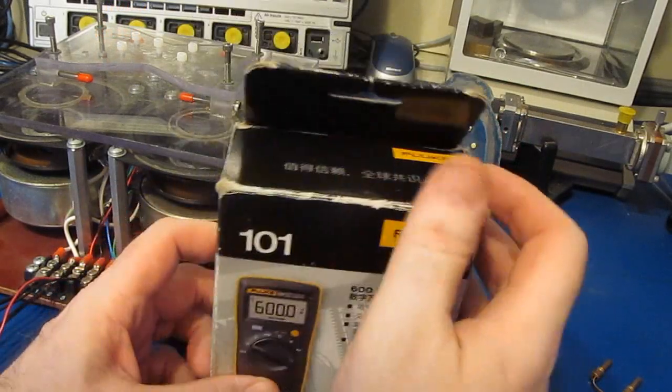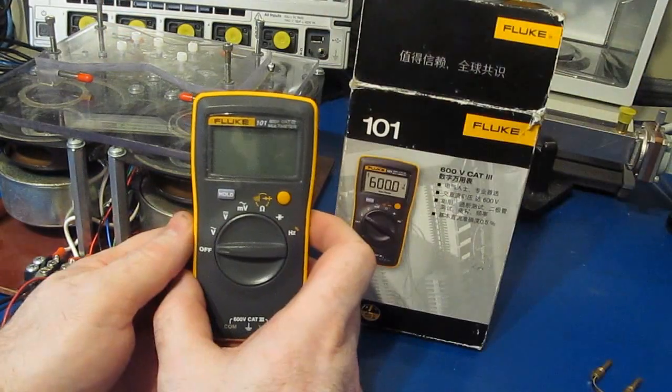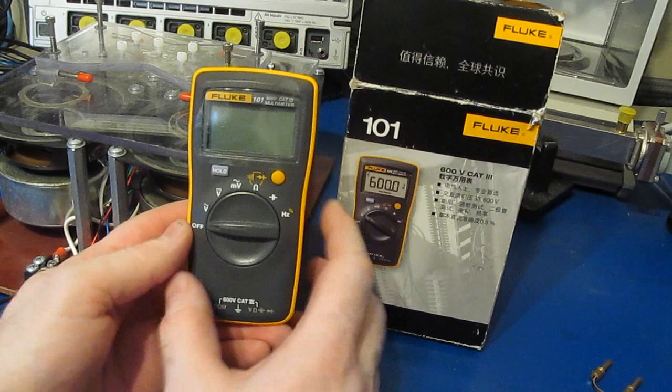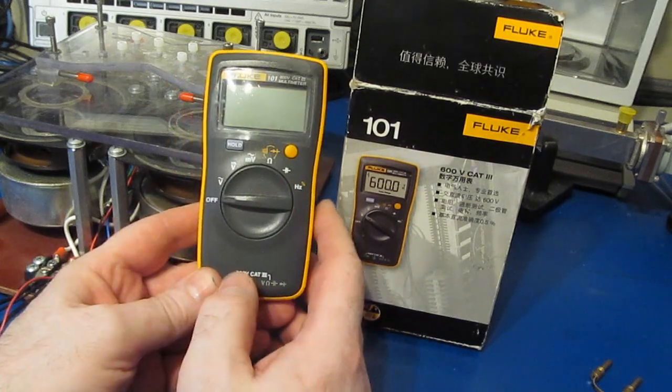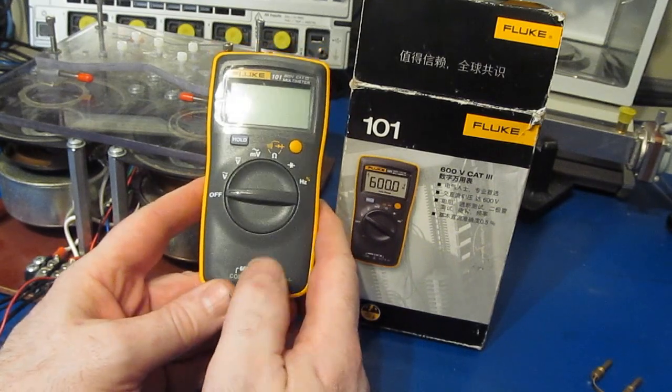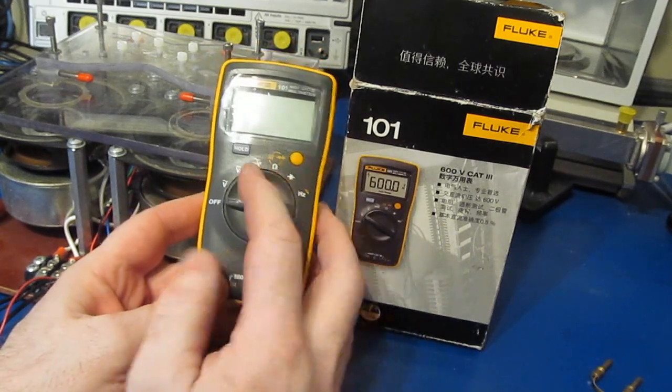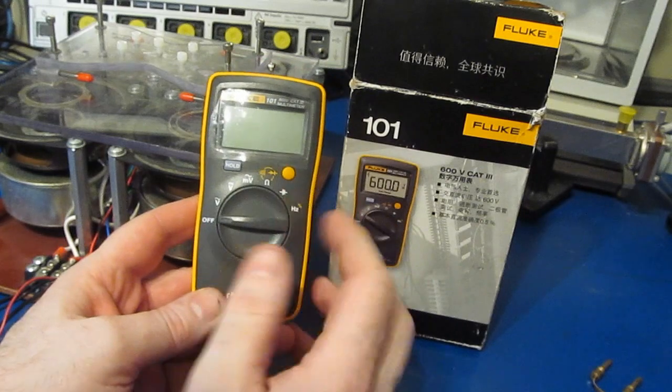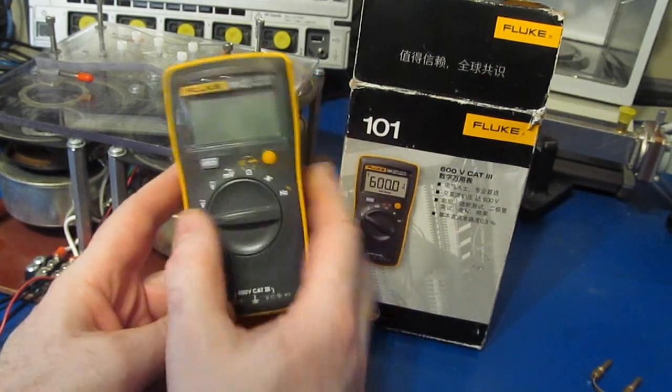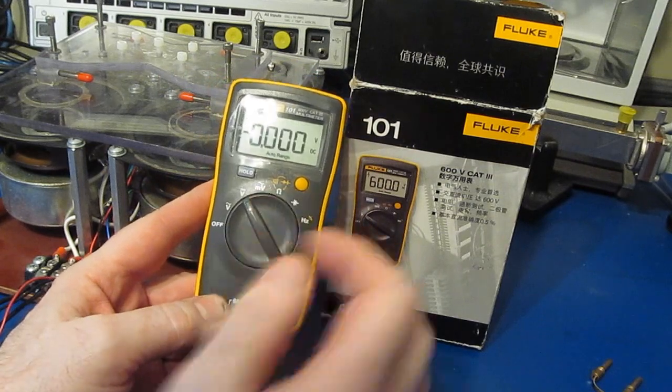So here I have my original Fluke 101. I purchased this meter several years ago as part of a test that I ran where I was looking at multimeter robustness. I only had two requirements for the meters that I looked at: they all had to be rated 600 volt CAT III minimum and they all had to cost less than fifty dollars. This particular meter went on to survive every transient I threw at it. It still works, I think. Yep, just fine.